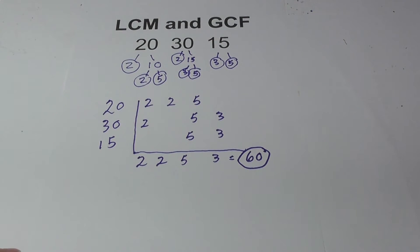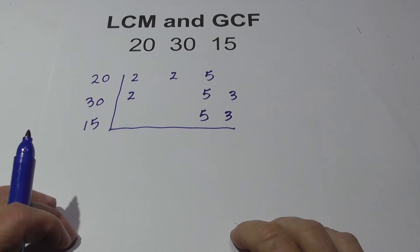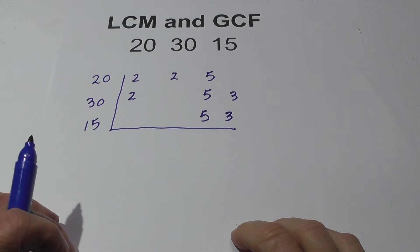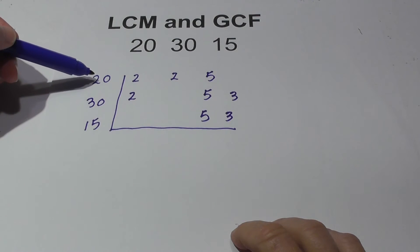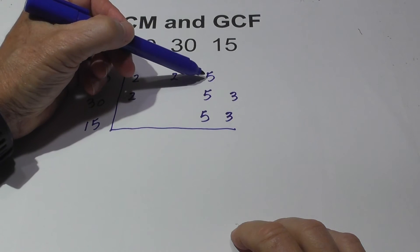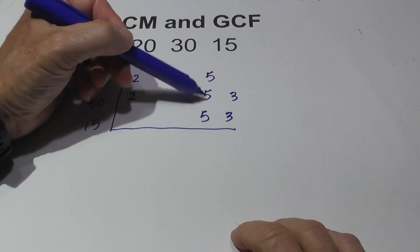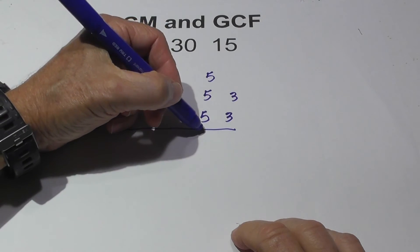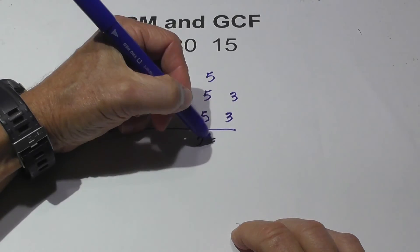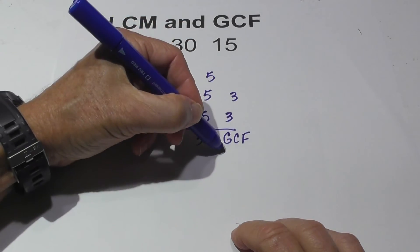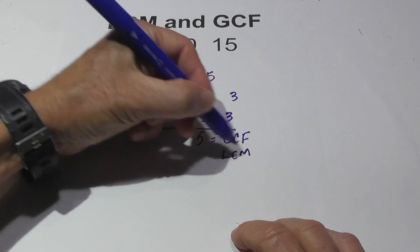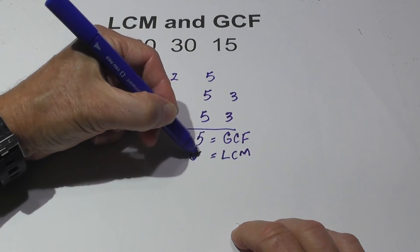Now let's work on the GCF. Now for the GCF, or greatest common factor, what you do is look for numbers that are prime numbers that are in all three. In this case, notice that 5 is represented in all three numbers, so the GCF is 5. So the GCF is 5, and the LCM equals 60.